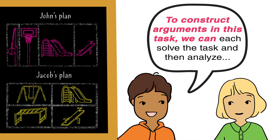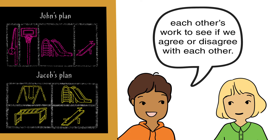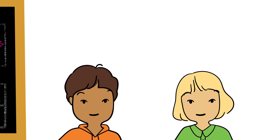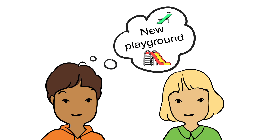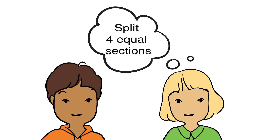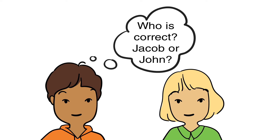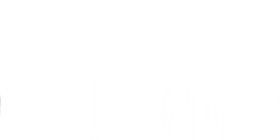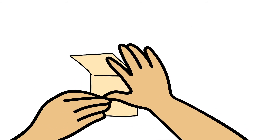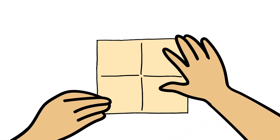To construct arguments in this task, we can each solve the task and then analyze each other's work to see if we agree or disagree with each other. Mathematicians prove their thinking using examples. The examples are evidence of their reasoning. This means they show their work in different ways. This helps them prove to themselves and others that their answer is correct.